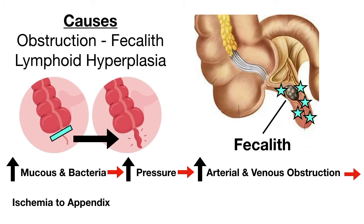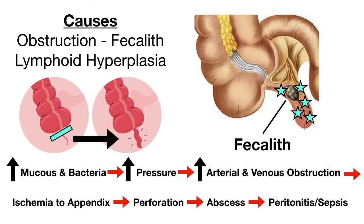As the appendix becomes more ischemic, the cells that make up the wall of the appendix are going to die off, making the wall thin. As that wall gets thinner and thinner, it could lead to perforation — when the appendix bursts or ruptures. If an appendix perforates, its contents can spill out into the abdominal cavity and lead to abscess formation. It may also cause peritonitis, which is inflammation within the abdominal wall cavity, and may even lead to sepsis — worsening infection that can get into the bloodstream.